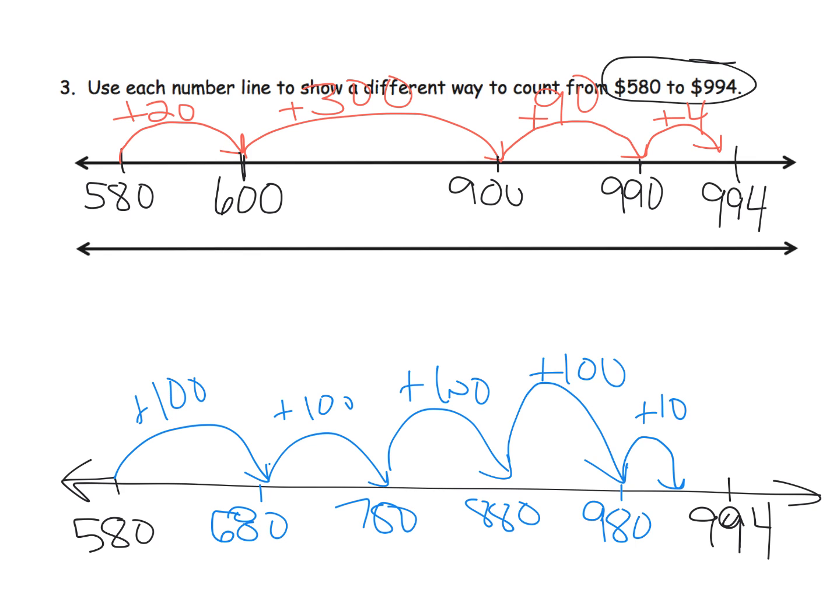That gets us to 990—we'll squeeze that in—and then we can add four more, and that gets us to 994.